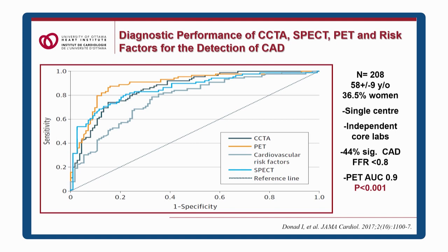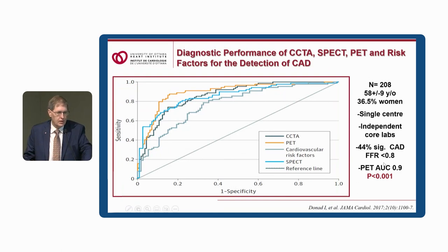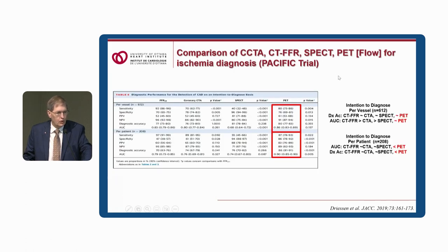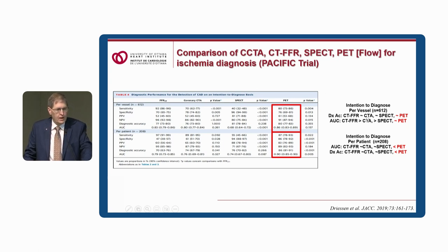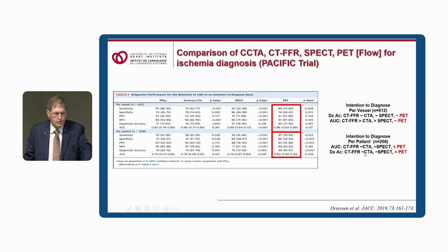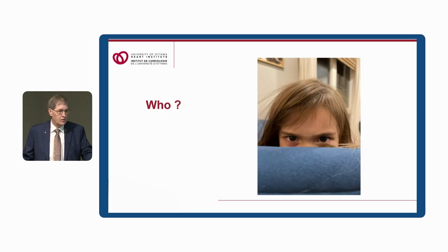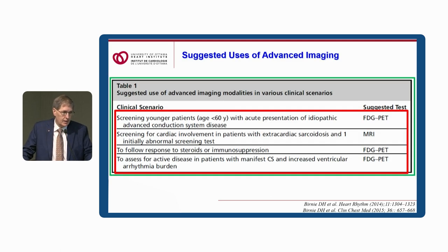The PACIFIC trial compared PET, SPECT, and CTA to each other, looking at functional significance based on invasive angiography. PET was the most accurate among these tests. They further examined patients with CT-FFR and showed that when looking at the patient as a whole, PET was the most accurate method for detecting disease.